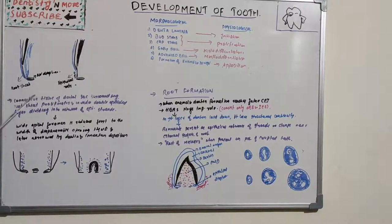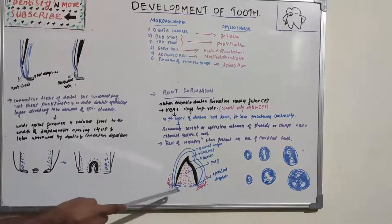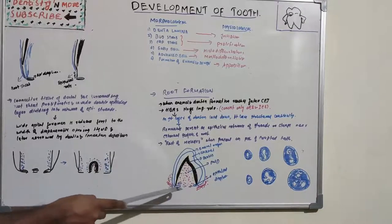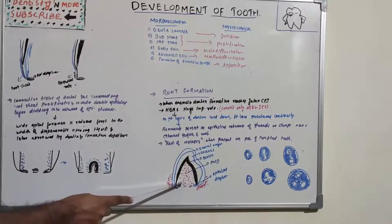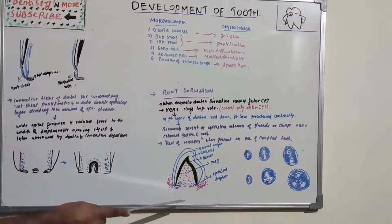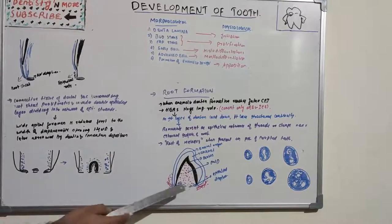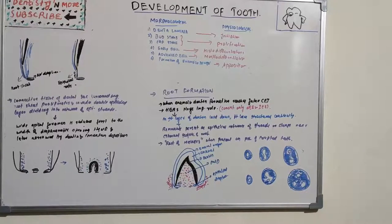In the last stages of root development, proliferation of the epithelium in the diaphragm lags behind that of the pulpal connective tissue. The wide apical opening is progressively reduced by the deposition of dentine and cementum at the apex of the root.